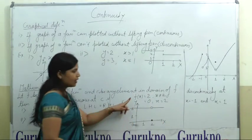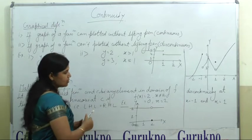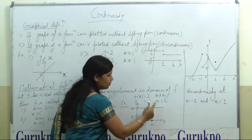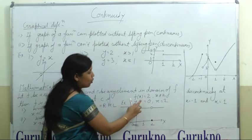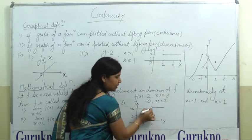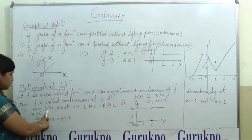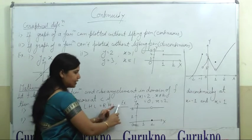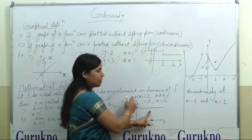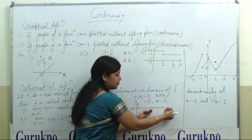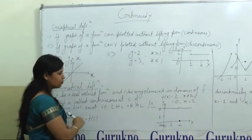Let us take this example: f(x) equals 2 when x is not equal to 2, and f(x) equals 0 when x equals 2. When x equals 2, f(x) is 0, and when x is not equal to 2, the function value is 2. The mathematical definition says the first condition is that the limit exists — left-hand limit and right-hand limit should be equal. At x equals 2, the right-hand limit is 2 and the left-hand limit is also 2, so the first condition is satisfied.